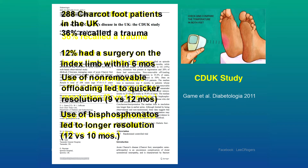In the largest Charcot foot audit — the CDUK study — of 288 Charcot foot patients, 36% recalled some type of trauma; 12% involved surgery on their index limb within the past six months, so surgery itself caused the inflammation leading to the Charcot. The use of non-removable offloading — total contact cast — led to quicker resolution than removable offloading. Importantly, the use of bisphosphonates actually led to longer resolution than without, which is why the joint task force concluded that available pharmacologic therapies have little evidence to promote healing of Charcot neuroarthropathy.